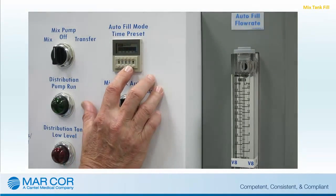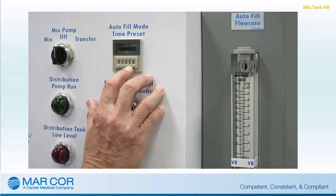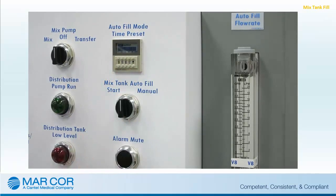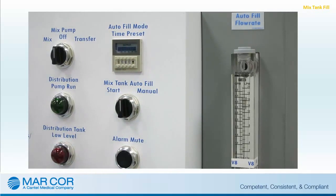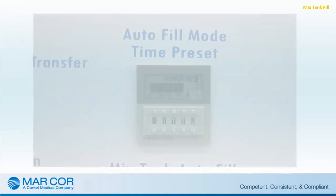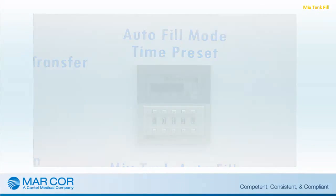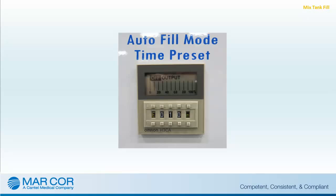Once the fill rate has been established, the autofill time preset can be set to fill the tank to the approximate level needed for mixing the bicarb powder. Note, as the timer counts down, the display will be reduced from a full black bar to a dashed white bar and off output will be shown when finished.